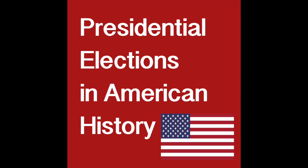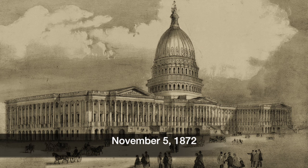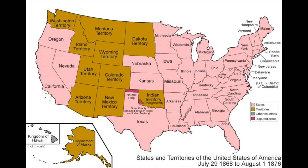Mr. Beat presents Presidential Elections in American History! The 22nd Presidential Election in American History took place on November 5, 1872. It was the first election in which every state used a popular vote to determine its electors.